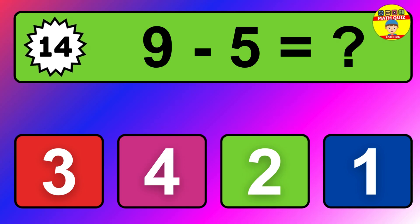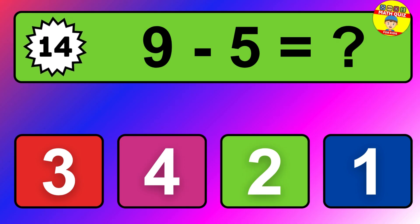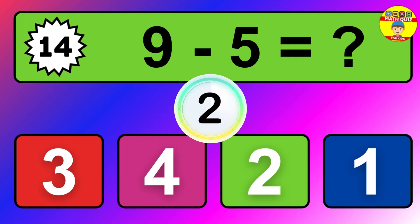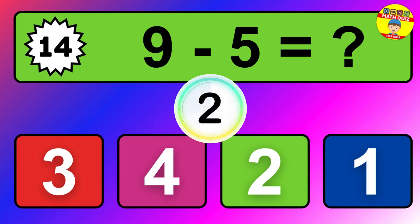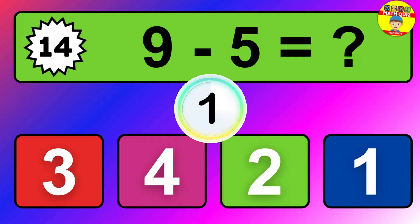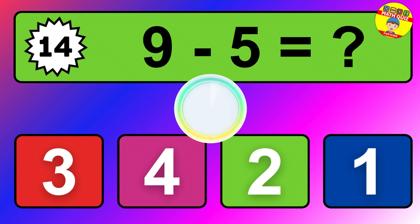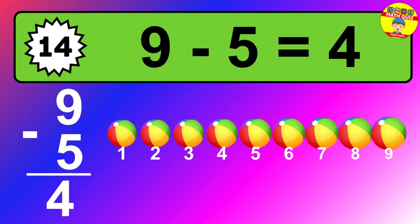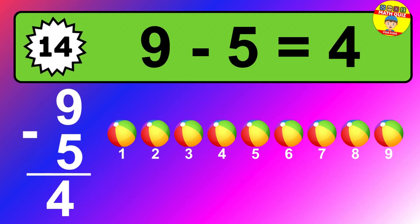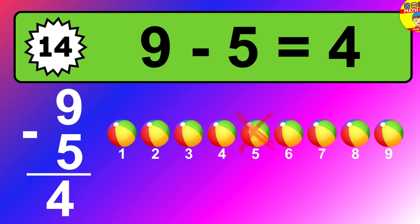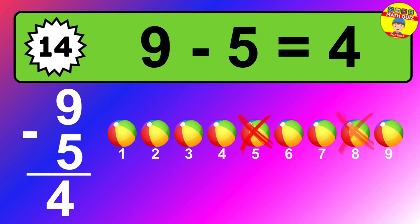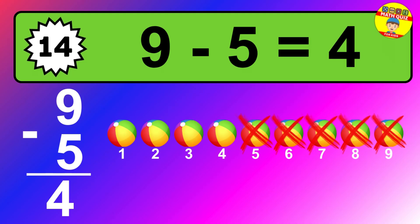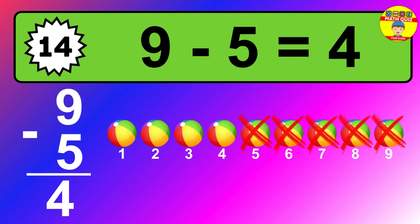Question 14. 9 minus 5 equals what? So the answer is 9 minus 5 is 4. Let's count it. 1, 2, 3, 4.